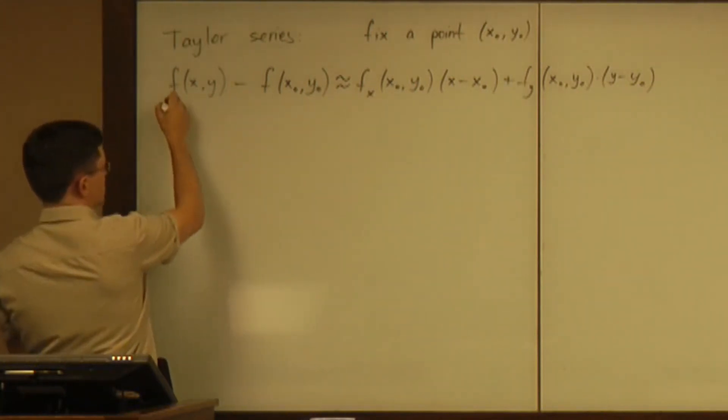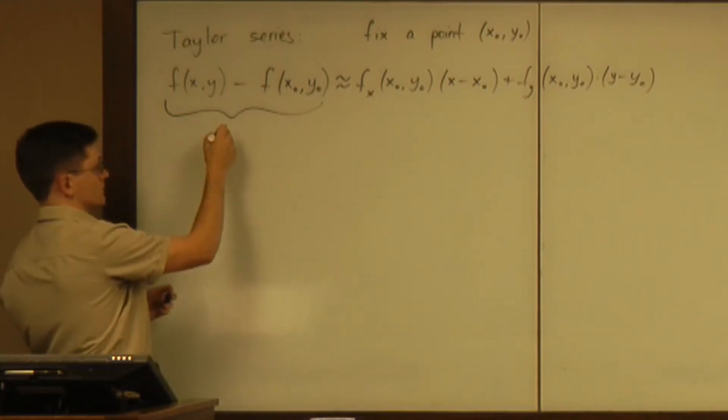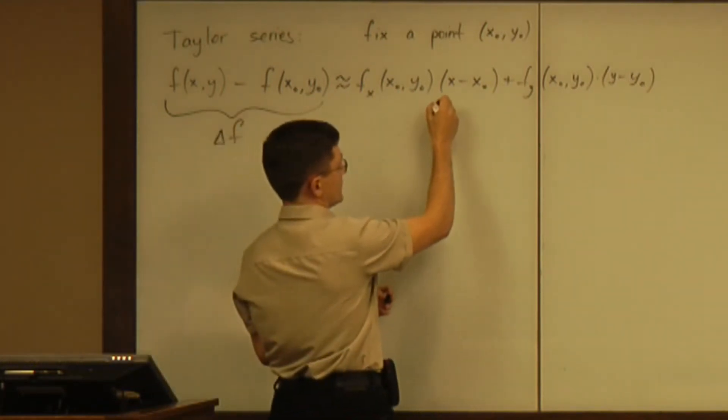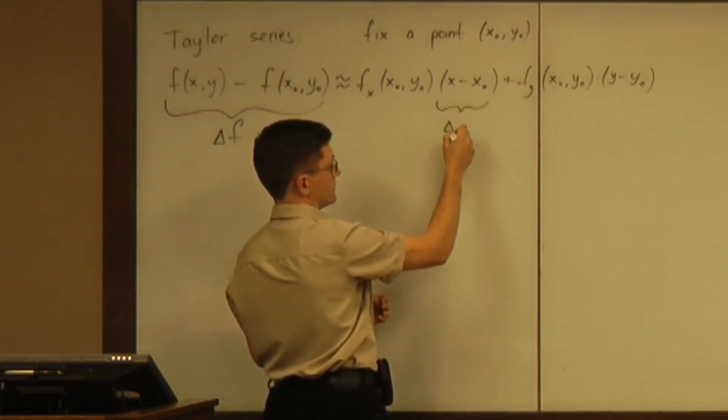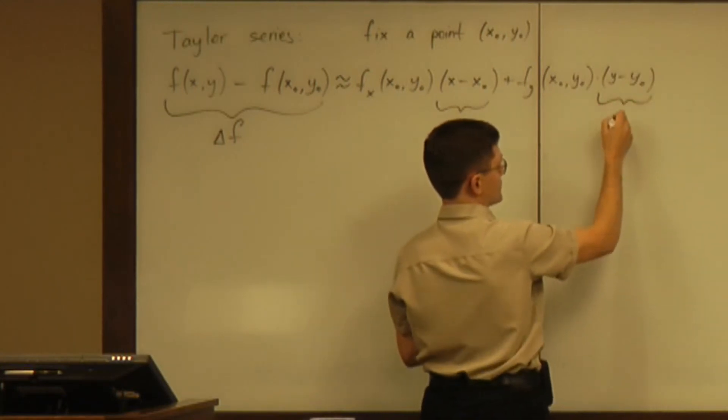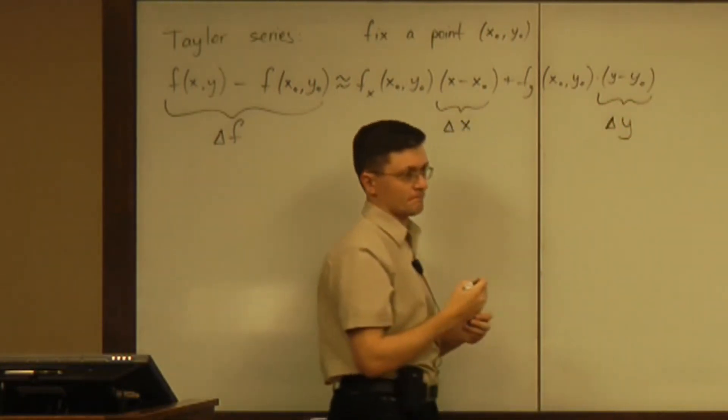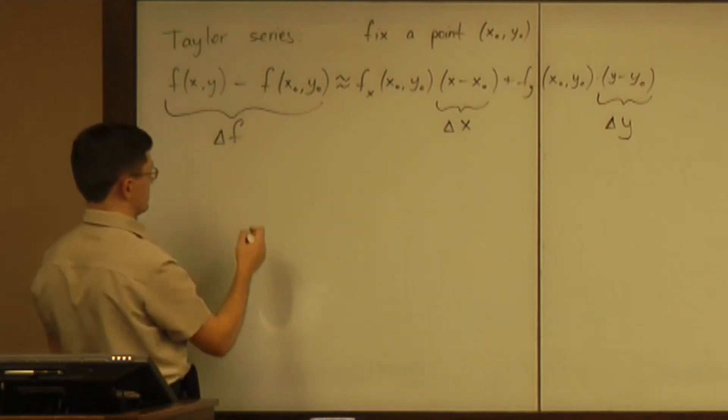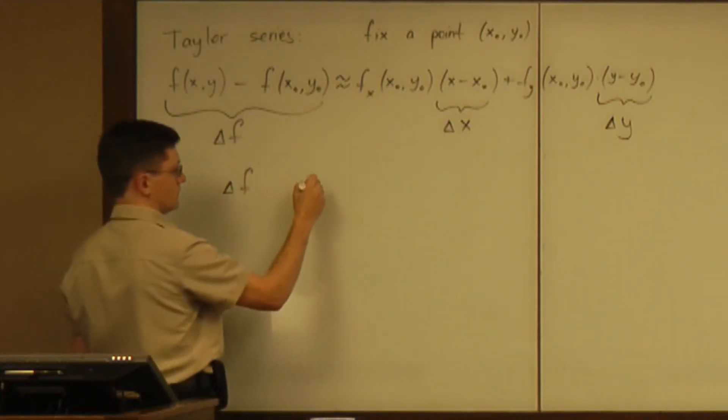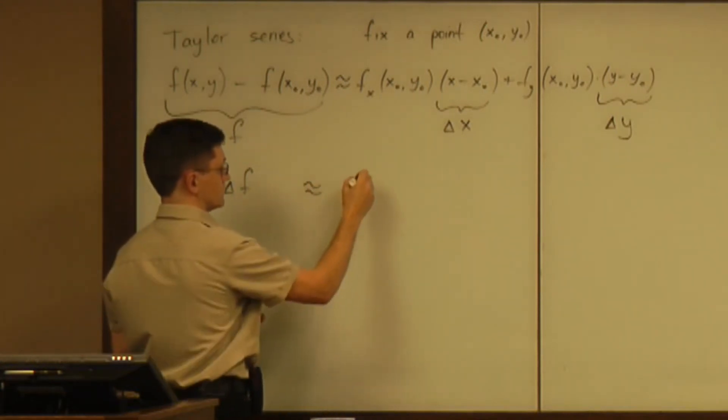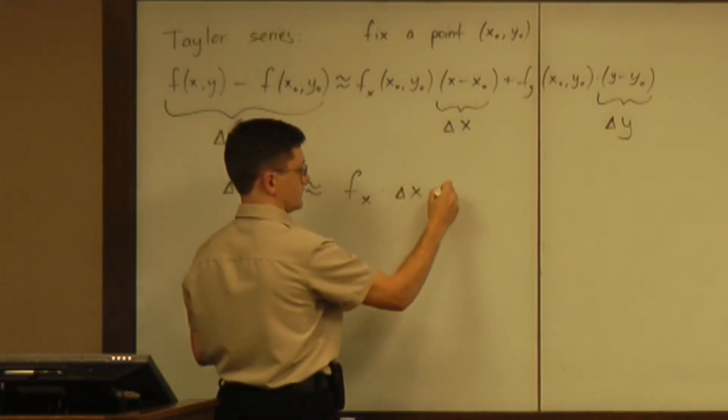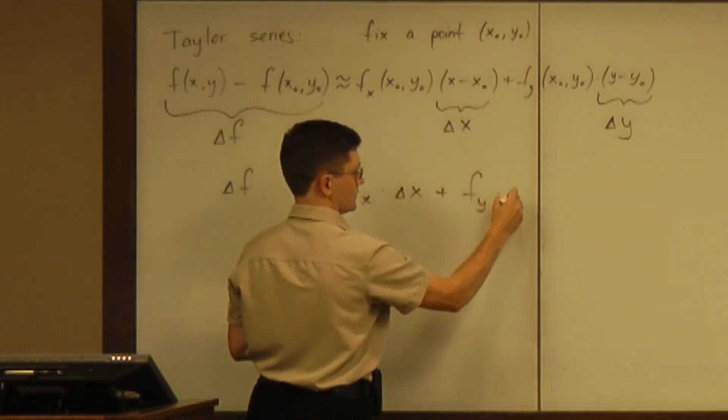And then that difference makes sense as the change of the function. And that difference makes sense as the change of the variable x. That difference is simply the change of variable y. And the meaning of the whole formula is that the change of the function is approximately equal to the partial with respect to x times delta x plus the partial with respect to y times delta y.